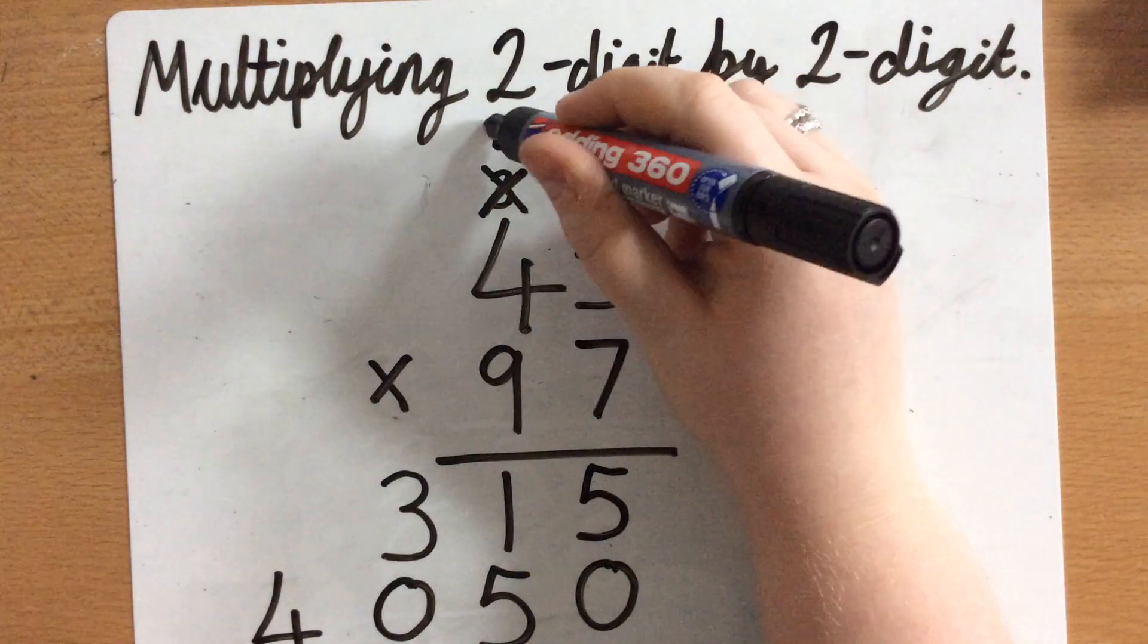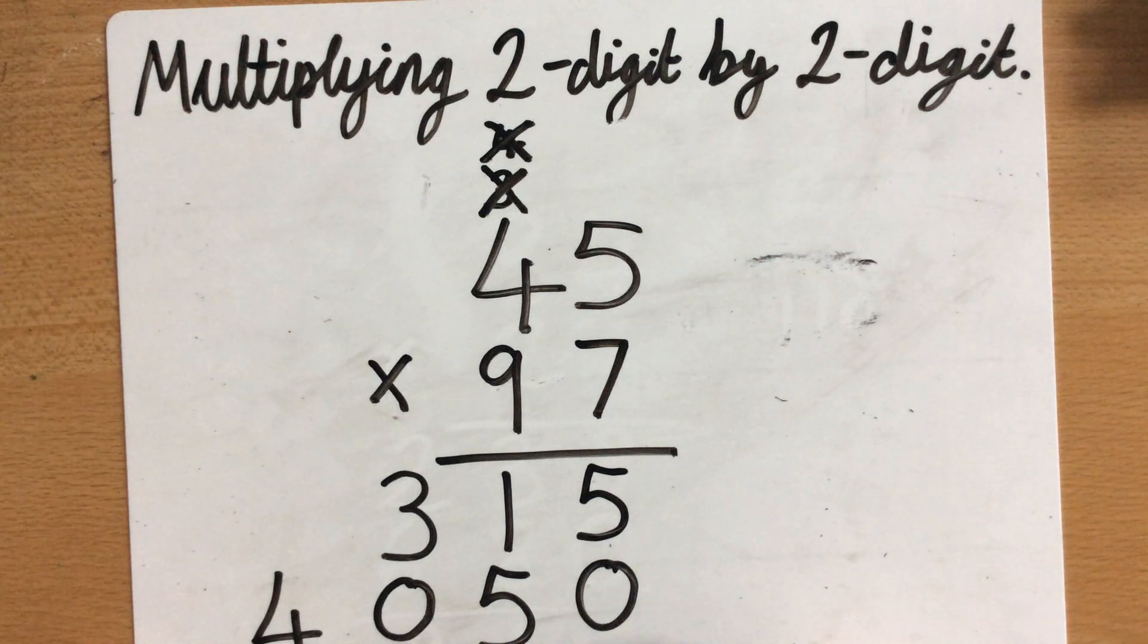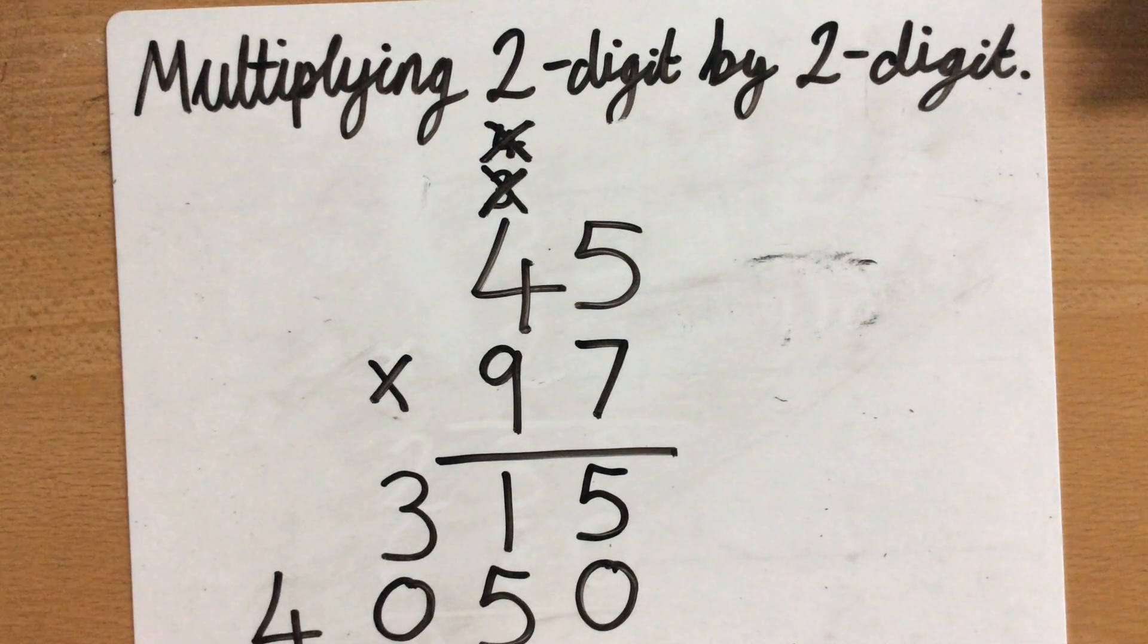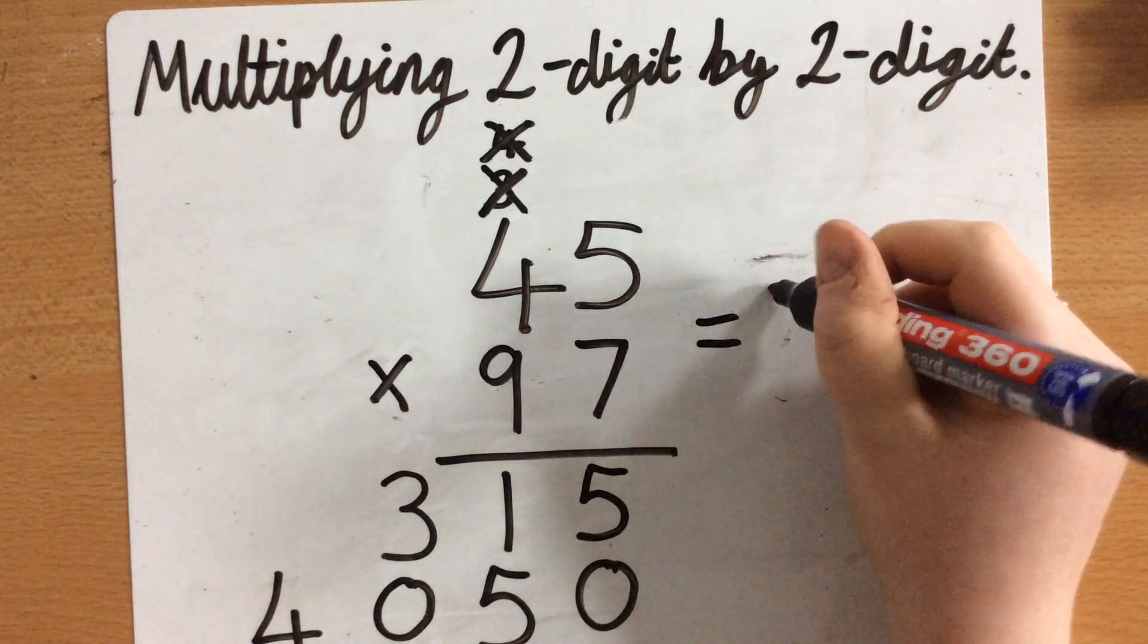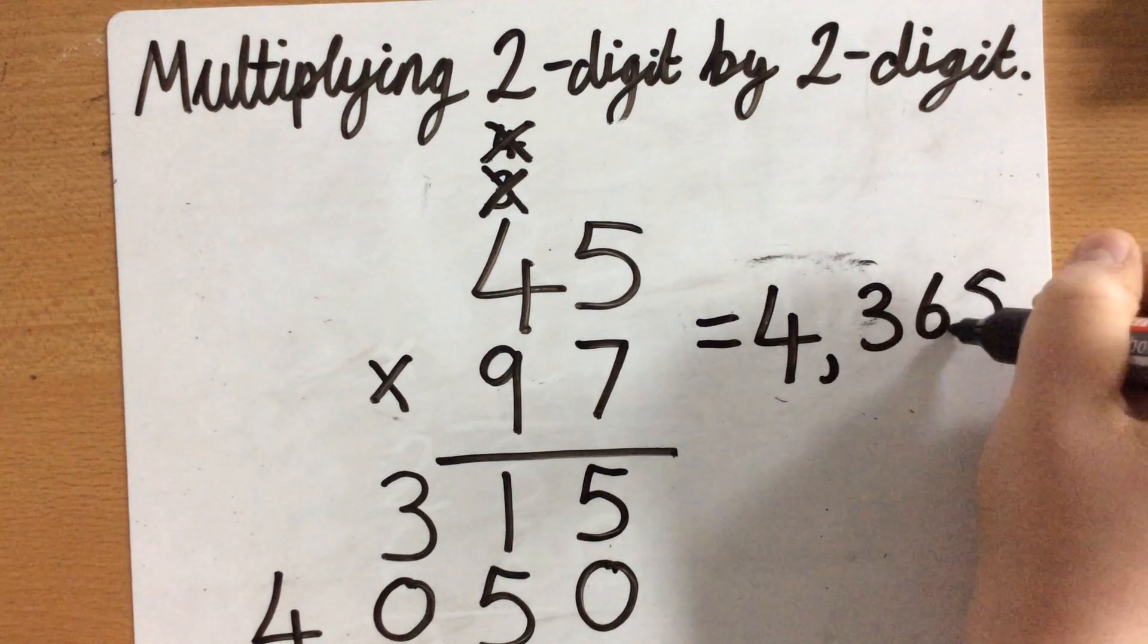Draw a line. I've added the 4. So, 5 add 0 is 5, 1 add 5 is 6, 3 add 0 is 3, and 4 add 0 is 4. So, that would be the answer. So, 45 times 97 equals 4,365.